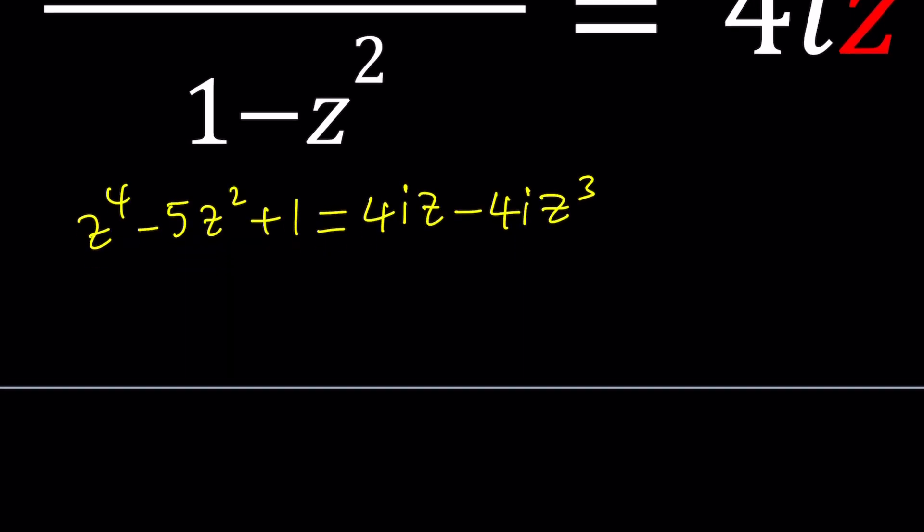Awesome. Let's put this into a full quartic equation in z: z to the fourth plus 4iz to the third, minus 5z squared minus 4iz plus 1 equals 0.